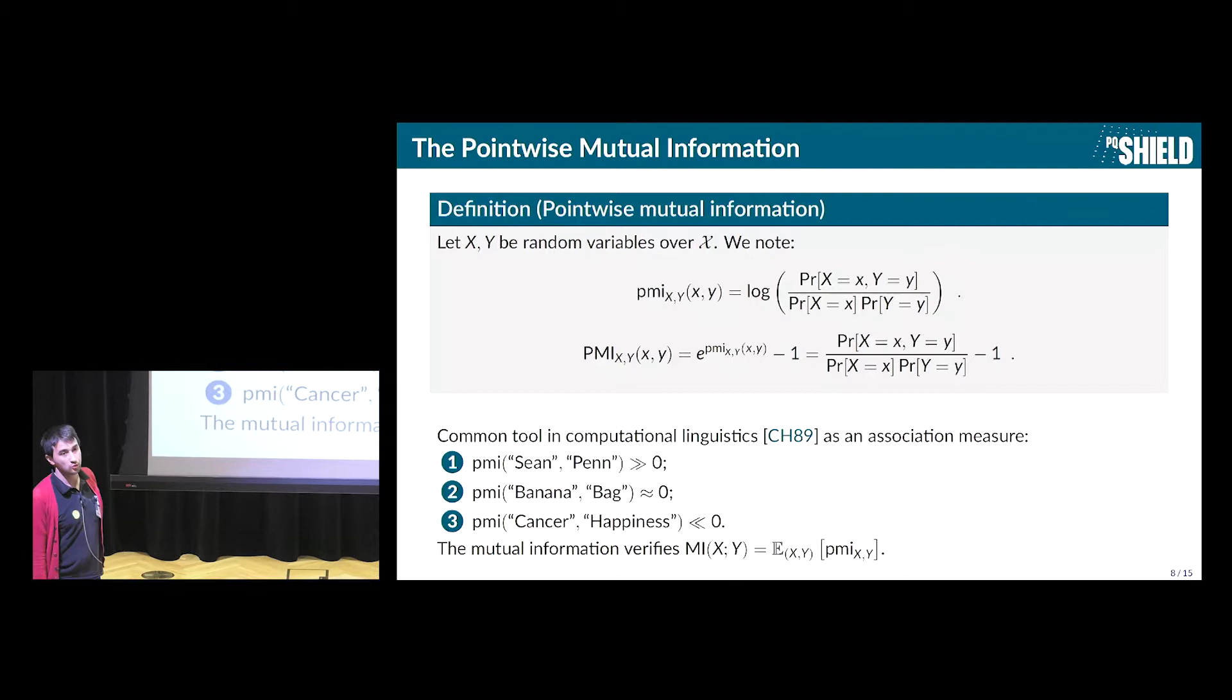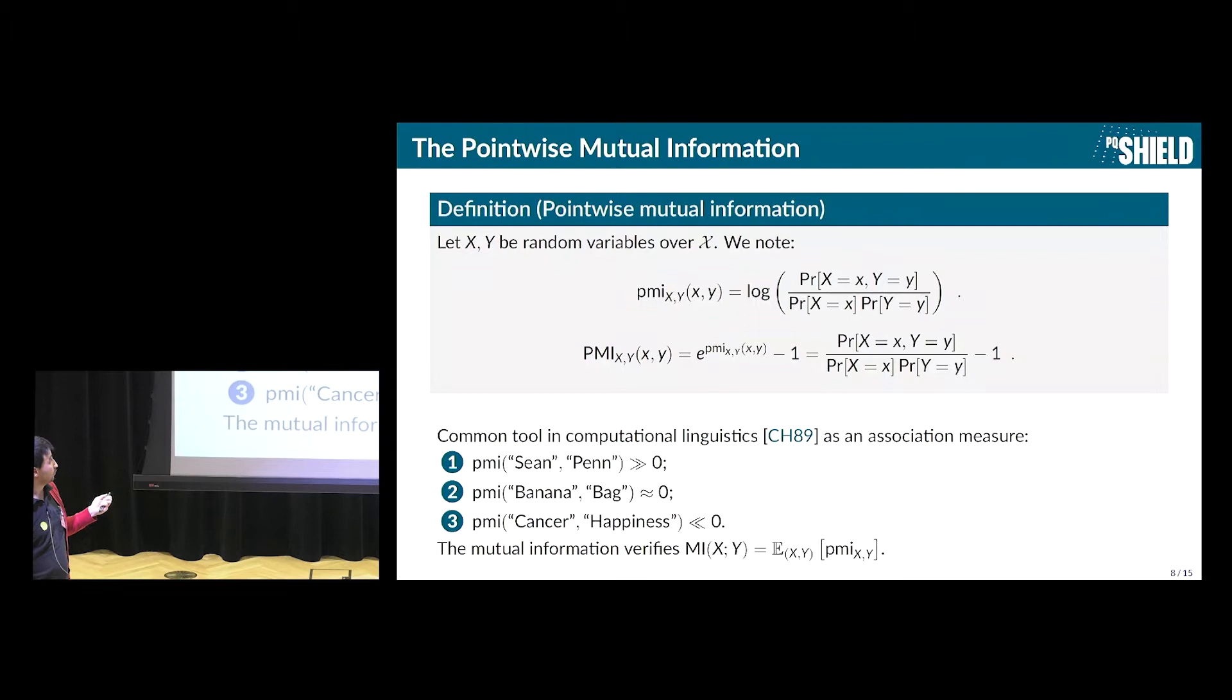So first I will briefly recall what is the pointwise mutual information. So the pointwise mutual information of X and Y over small x small y, it's the log of the probability, so it's the log of a fraction, and on the numerator, it will be the joint probability that big X equals x, big Y equals y. And on the denominator, it will be the disjoint probability that big X is equal to x and big Y is equal to y. And so we also define its exponential form, which is exponential of small pmi minus 1, and this is the one we are going to use. And it's a really useful tool in computational linguistics as an association measure. So for example, if two words have more chances of occurring together, then the PMI will be really high. And if they have small chances of appearing together, then it will be really low. And we can see, for example, that the mutual information is the expected value of the PMI. So it appears quite naturally in information theory.